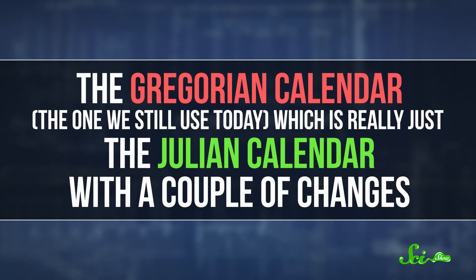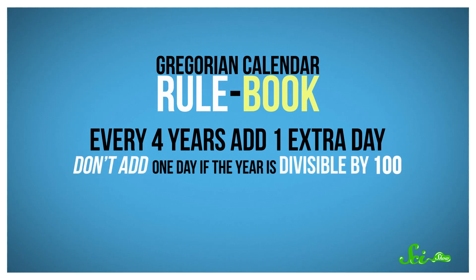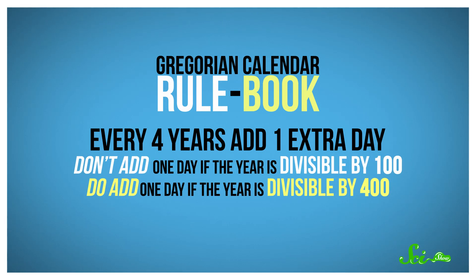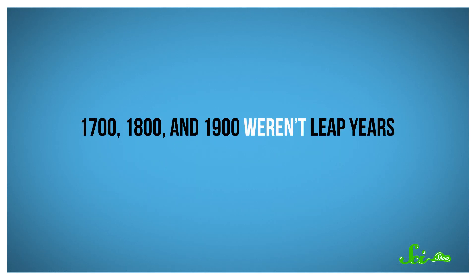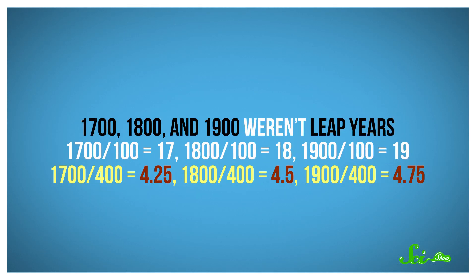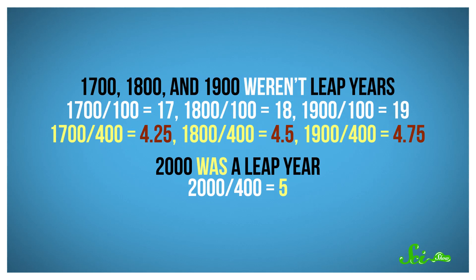The Gregorian calendar is really just the Julian calendar with a couple of changes. The new rules were: every four years, add an extra day — except don't add it when the year is divisible by 100 — except actually do add it if the year is divisible by 400. So 1700, 1800, and 1900 weren't leap years, because they were all divisible by 100 but not by 400. But the year 2000 was a leap year, since 2000 is divisible by 400.